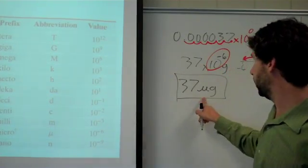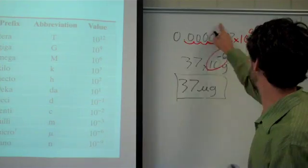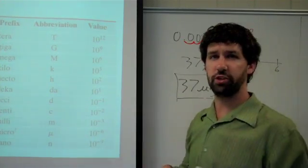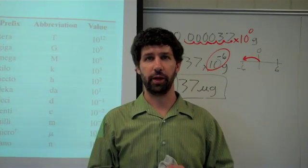Micro is a small unit. We should have a small number of things. This is a small number. Our reasonableness check at least works out to some extent.